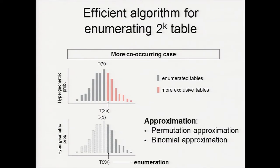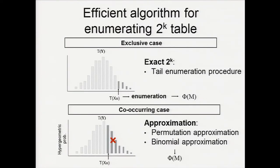For the more co-occurrence case, because there may still be too many tables to enumerate, we use an approximation via permutation test and binomial test. In summary, for gene sets in the exclusive case, we use the exact 2^K tail enumeration algorithm, resulting in very high accuracy and fast computation. For the co-occurring case, we use the approximation for similarly good accuracy and speed.